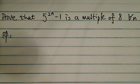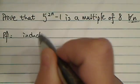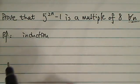Prove that 5 to the 2n minus 1 is a multiple of 8 for all n. This is a really good question. Of course, you're going to be using induction for any sort of problem like this.